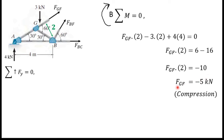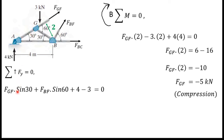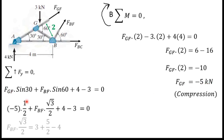Next I am going to consider sum of all vertical forces. Writing the equation: FGF × sin 30 is the vertical component of the FGF force, plus FBF × sin 60 is the vertical component of the BF force, plus 4 kN for the support reaction — all positive since directed upward — minus 3 kN for the downward load. Substituting FGF equals minus 5 kN and simplifying, I can get FBF equals 1.73 kN. Since this is a positive value, FBF is a tension force.